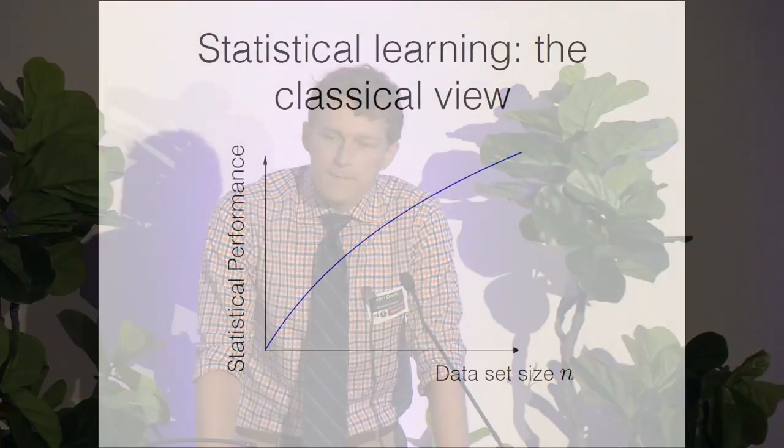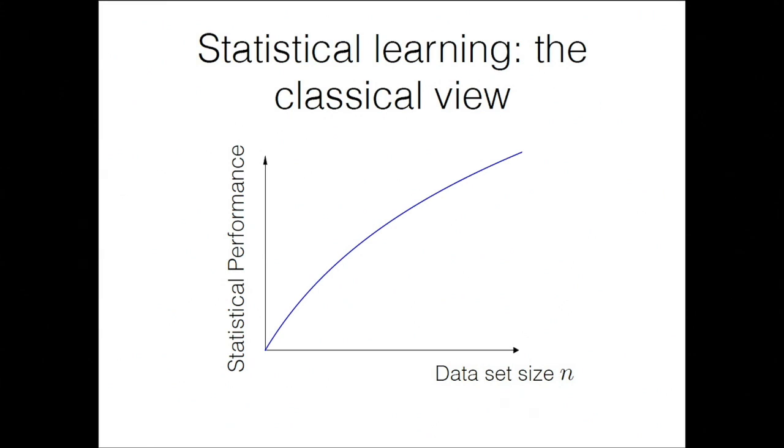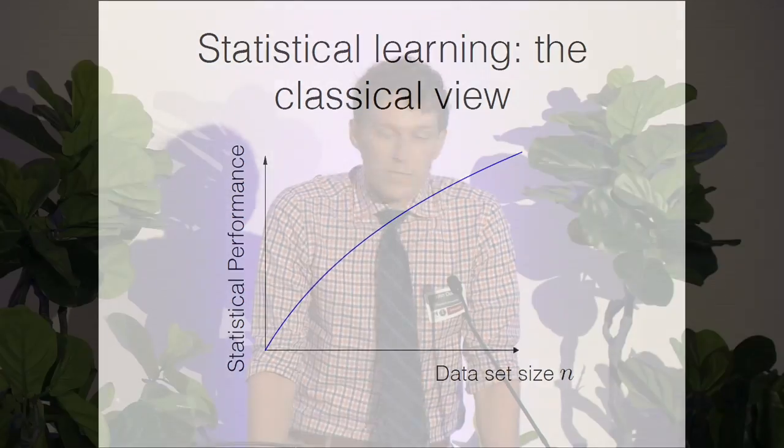What I try to do is incorporate these kinds of issues into analyses of machine learning algorithms and develop procedures that automatically trade off between these different difficulties. The classical view in statistics and machine learning is that we get more data and we get better performance — data set size grows, performance gets better. I think this is the wrong view to take now. It's not just how much data we've collected.